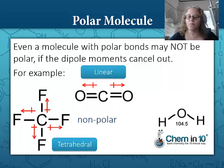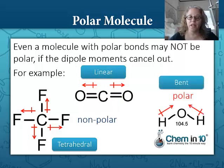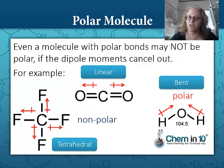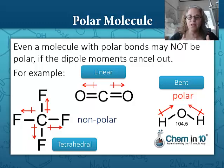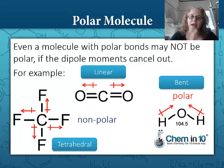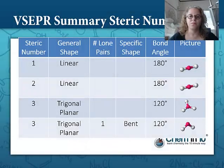Contrast that with water. Again, oxygen is the more electronegative atom, so the negative region of this molecule is more around the oxygen, leaving the hydrogens relatively positive. Because water is bent, the dipole moments don't cancel out like they do in carbon dioxide, leaving a net negative region and a net positive region, making water a nonpolar molecule.